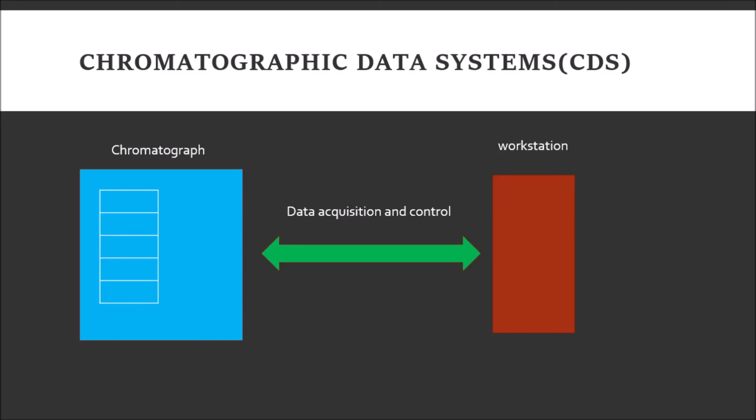Here is an example of a CDS: a chromatograph is connected to a workstation. The workstation can acquire and control the data coming from the chromatograph. This is one type of chromatographic data system.